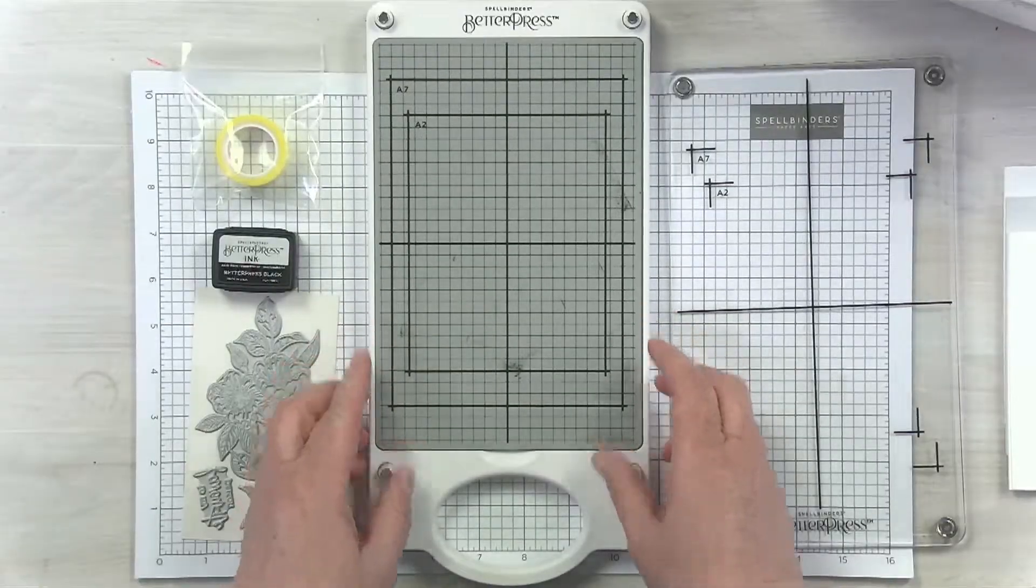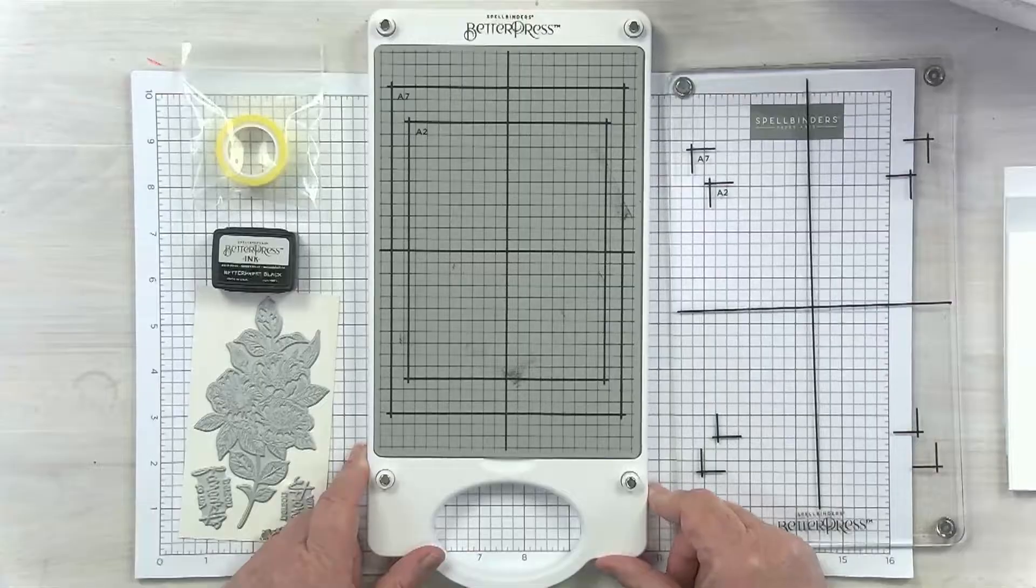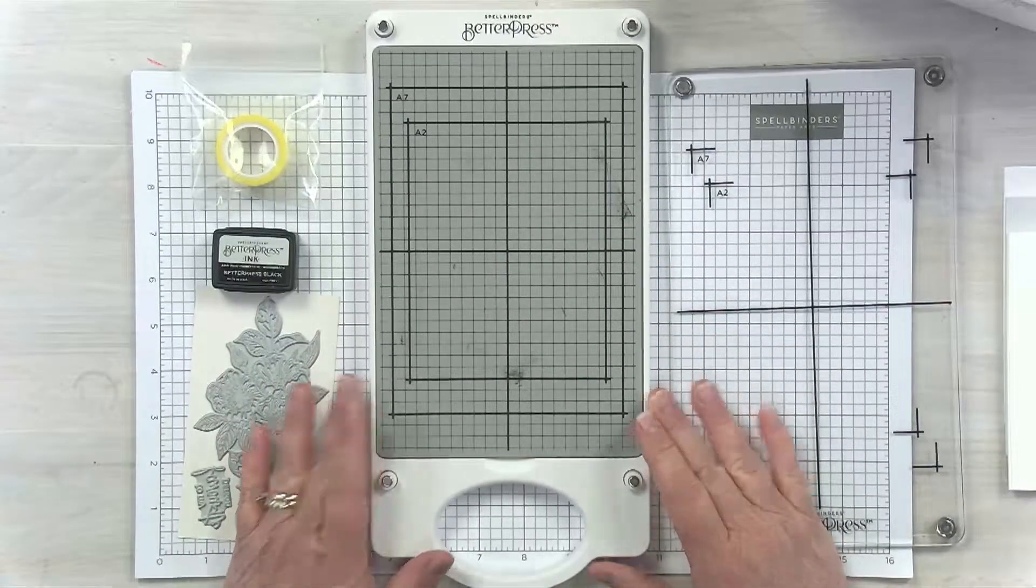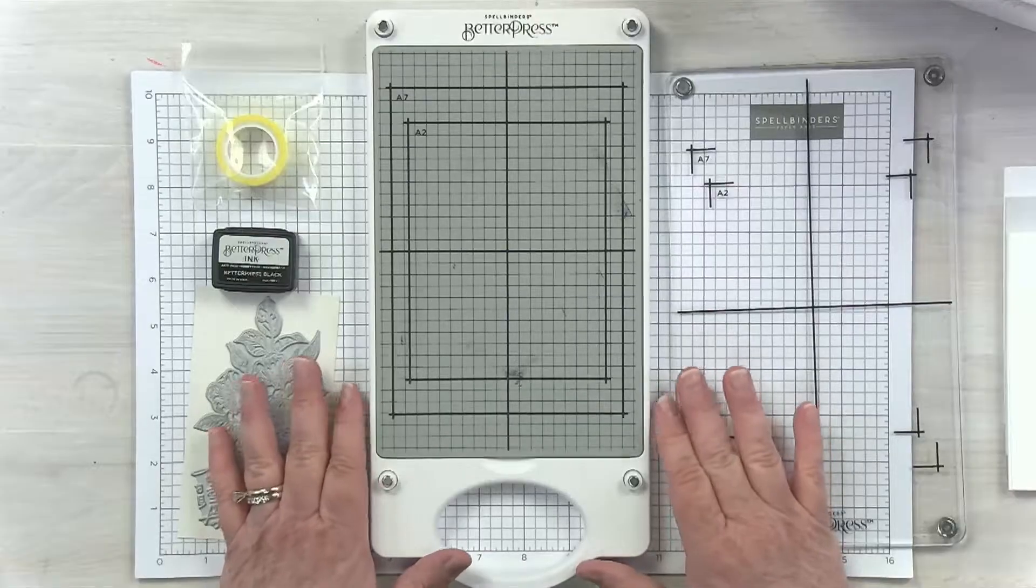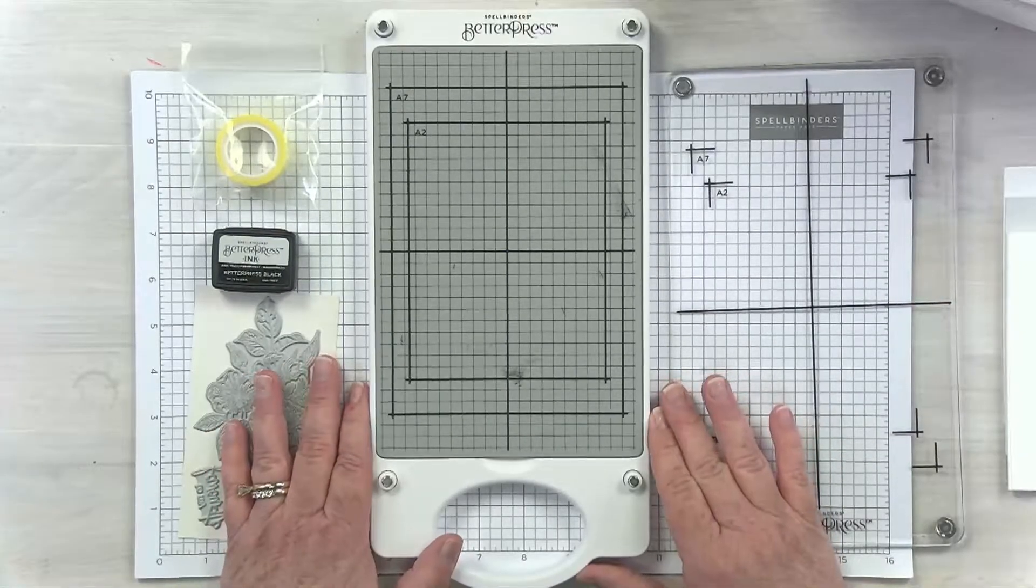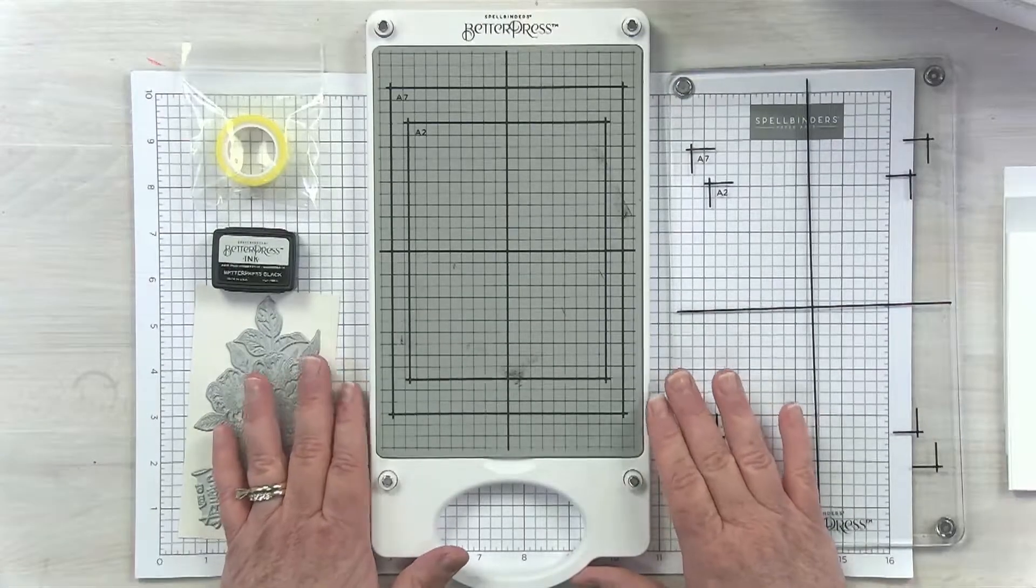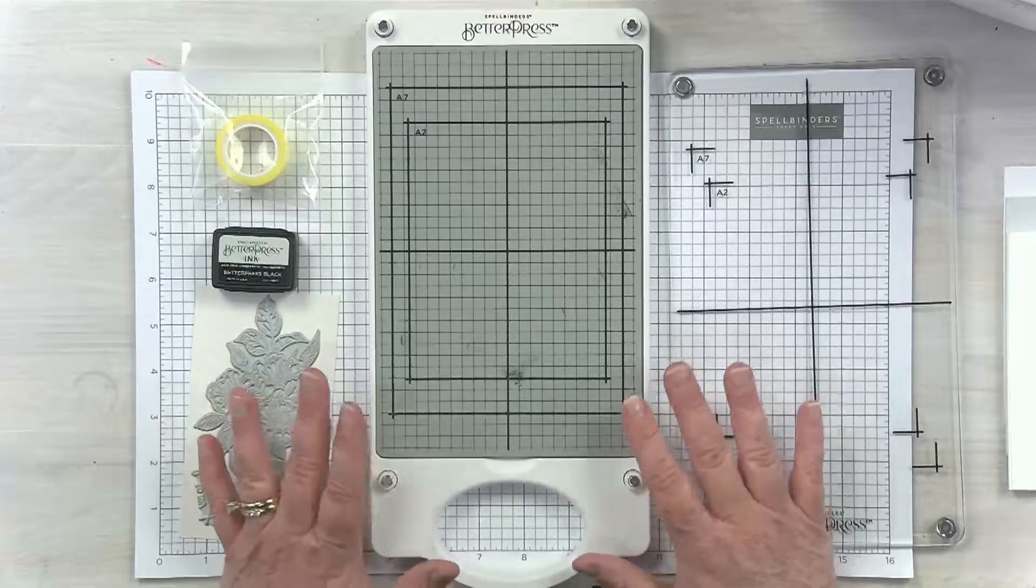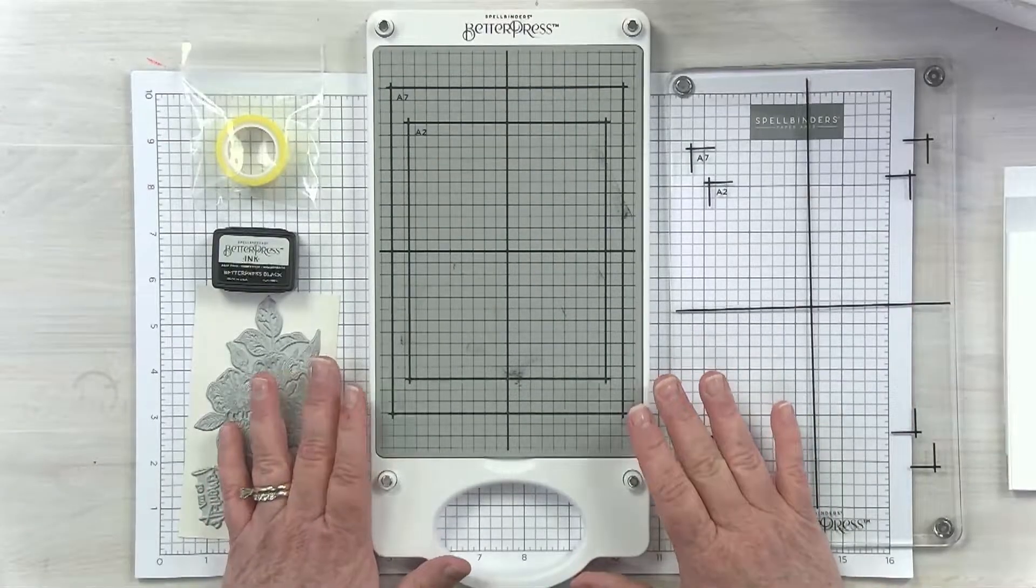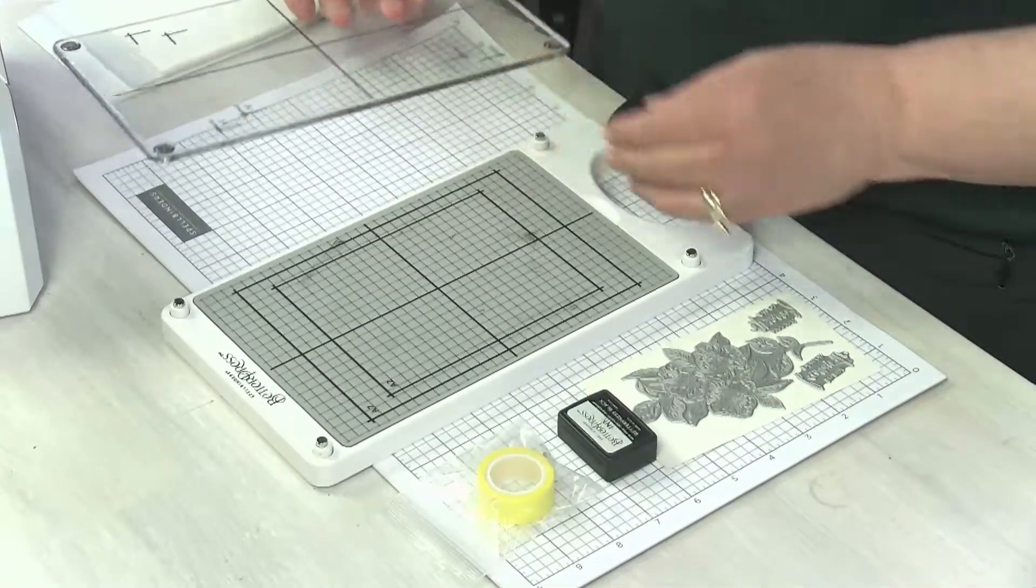Next, I'm going to put my magnetic insert here, and that fits perfectly inside our chase. You can see I've used mine a few times already and I've got a little ink on it. Totally normal. When you first unpack your Better Press, take a good look because it will probably never look that pristine again. It's common to have a few ink spots on it. We're going to do a separate video on cleaning both the Better Press system and the plates, so don't worry about that.